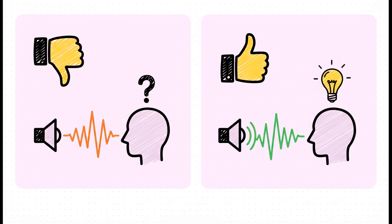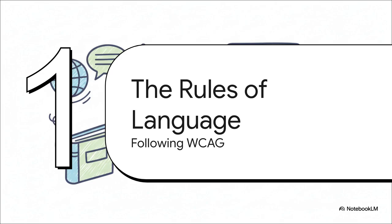On the left, with no language tag, a screen reader just gives its best English guess: 'Hasta la vista' — kind of clunky, right? But on the right, once we tell it this is Spanish, you get a proper, clear 'hasta la vista.' The meaning is clear and the whole experience is just smoother. So how do we make sure we're doing this right?